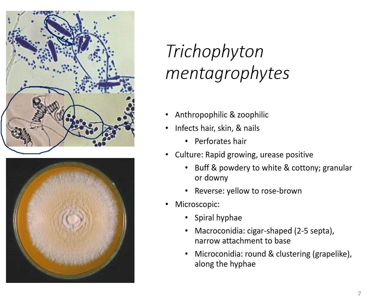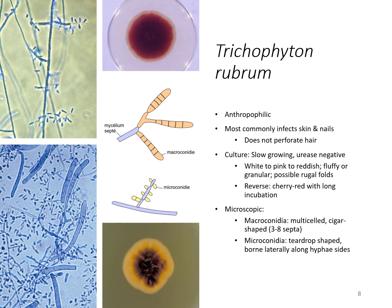Trichophyton rubrum is transmitted man to man. It most commonly infects the skin and the nails, and it does not perforate the hair — it does not invade the shaft.